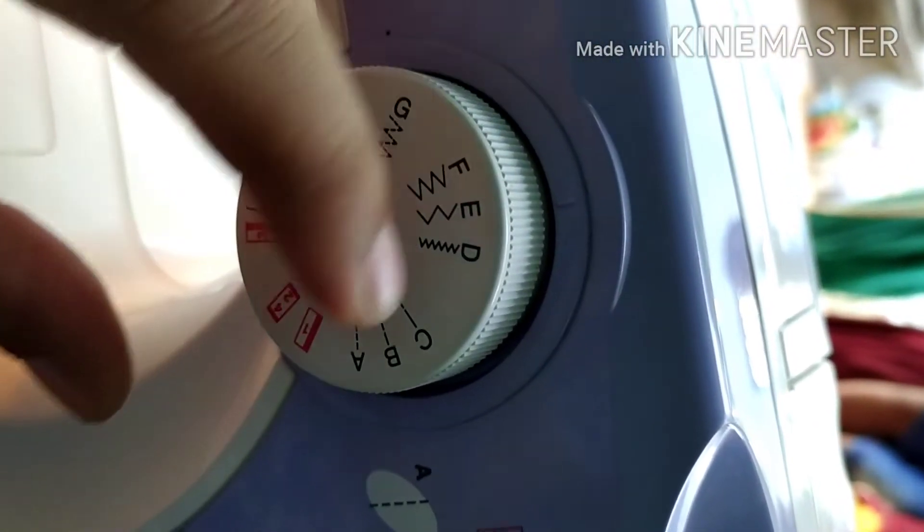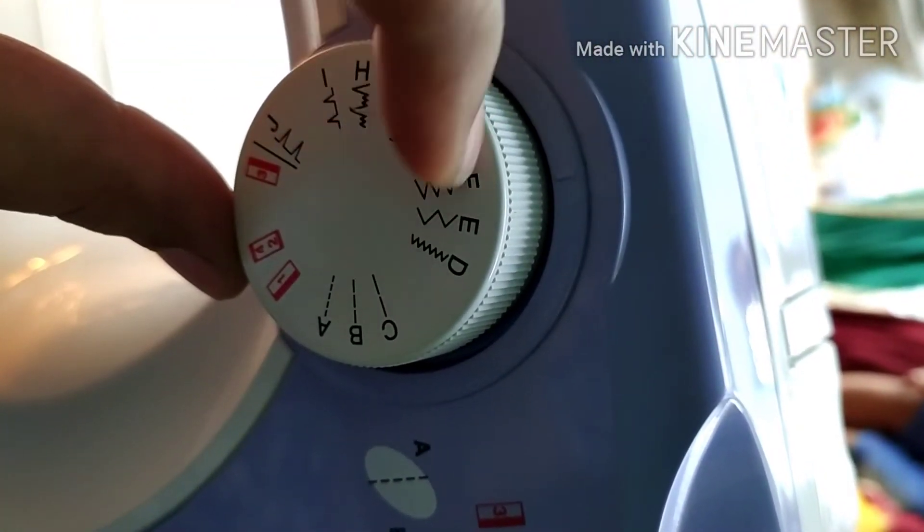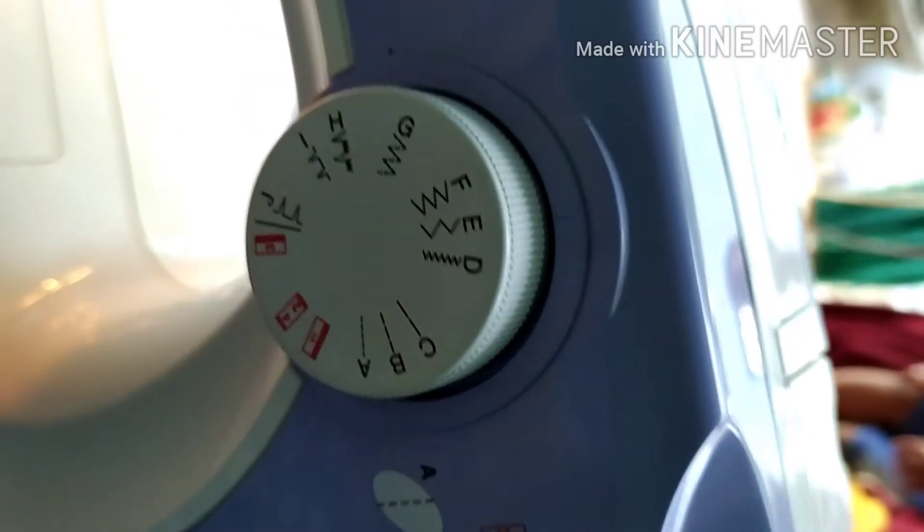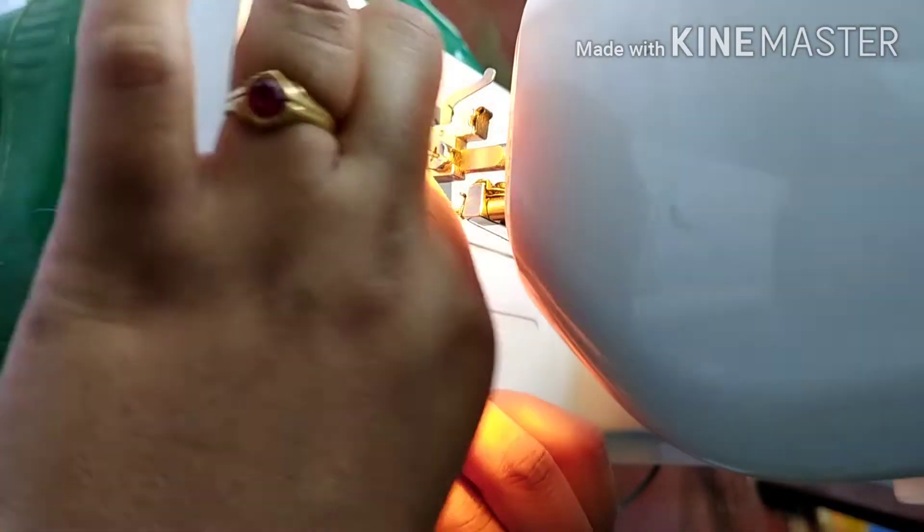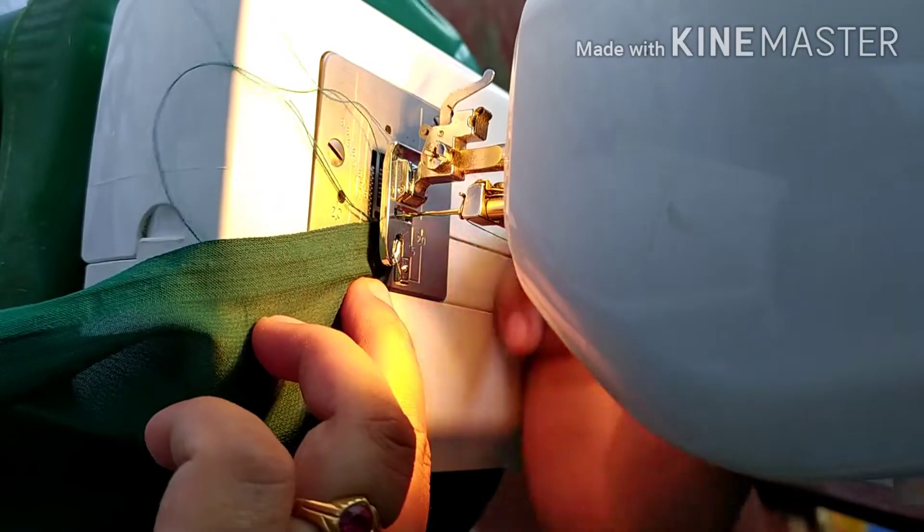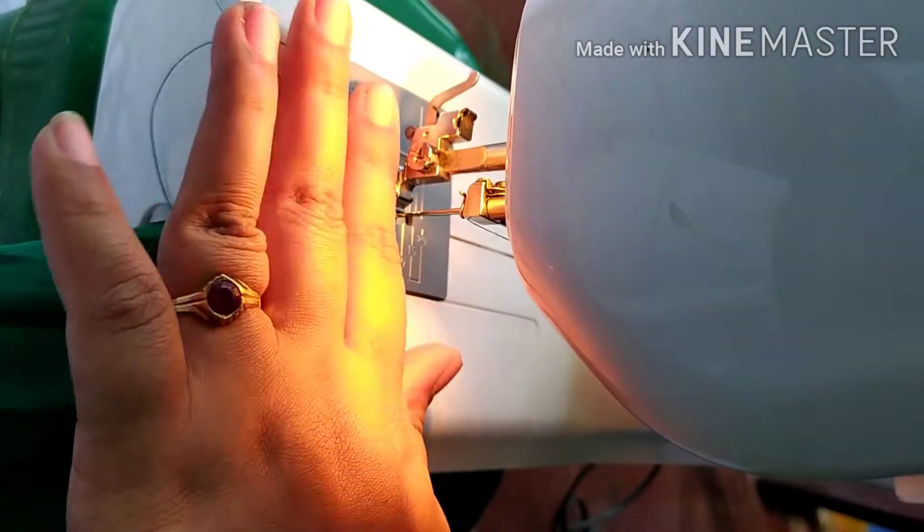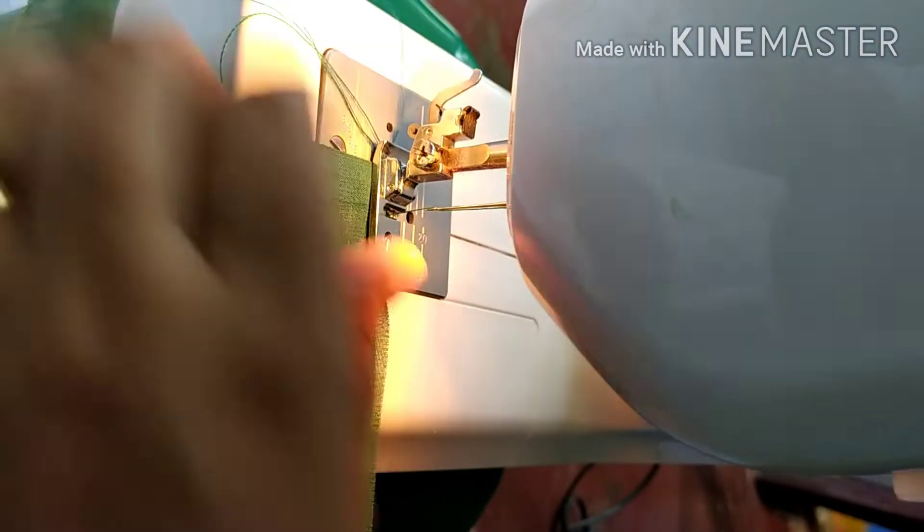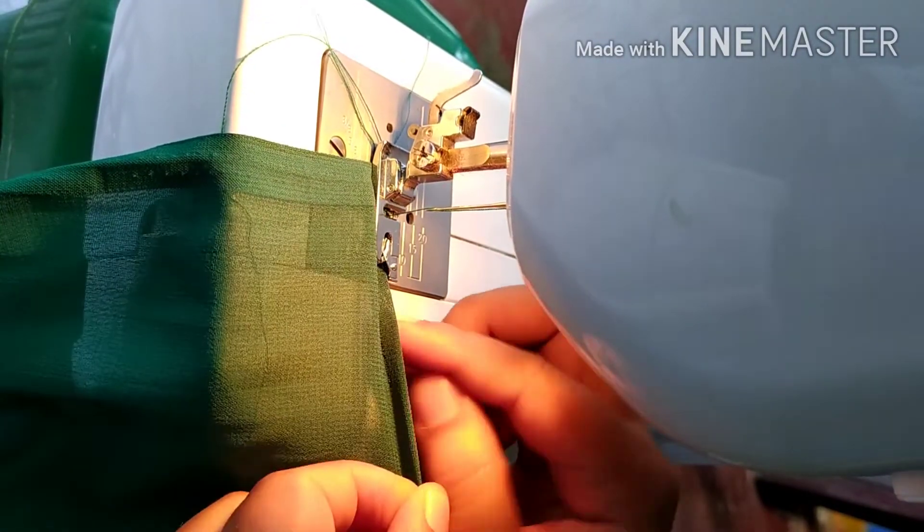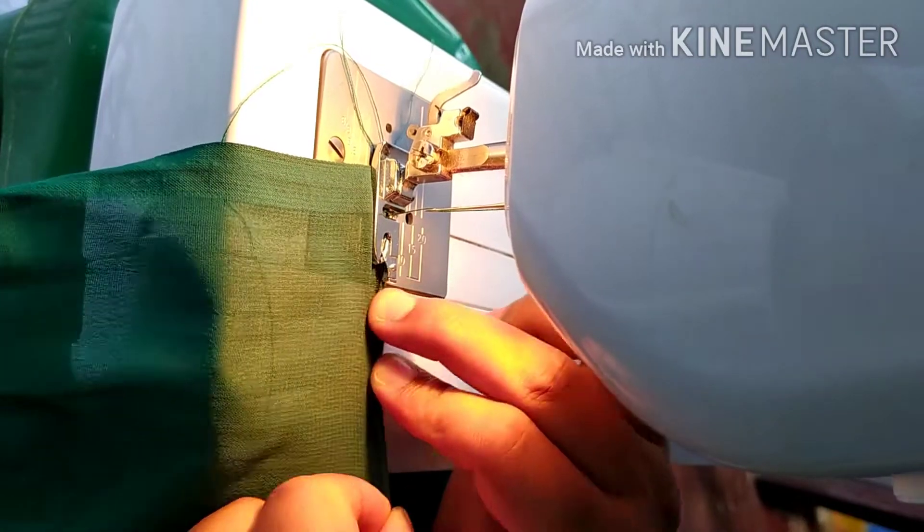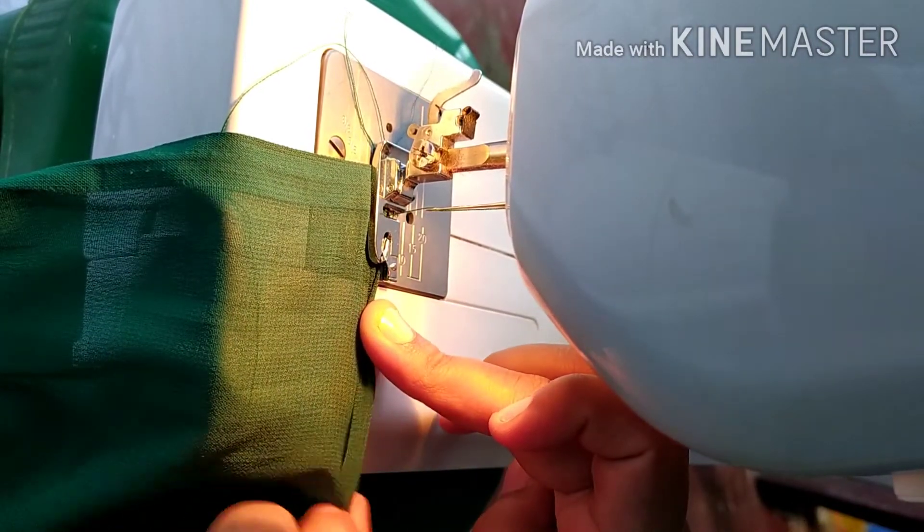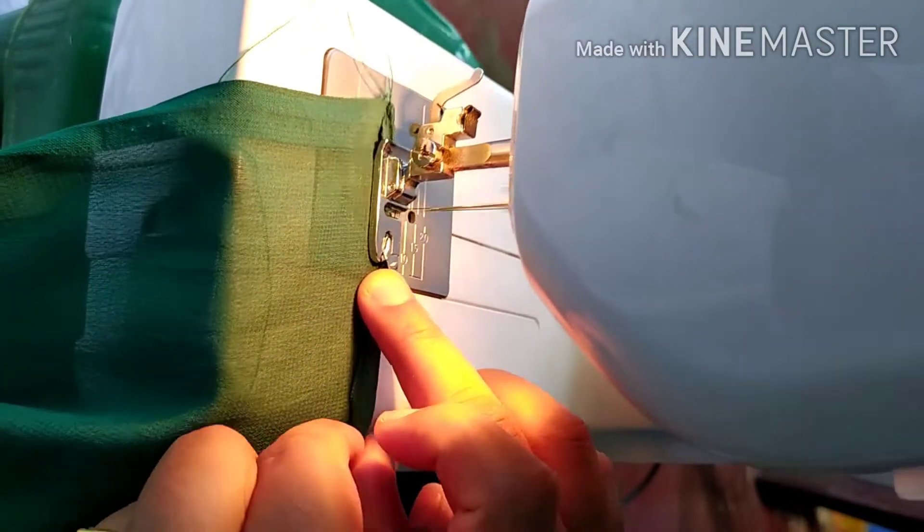Now I'll put it on the zig-zag setting. We're going to fold and stitch it on the zig-zag side. We'll place it on the needle and position it on the side, then pull and fold on the zig-zag side.